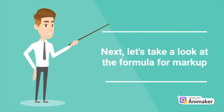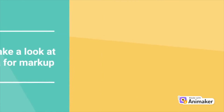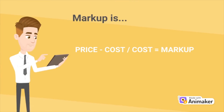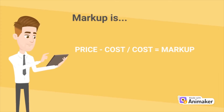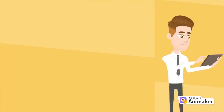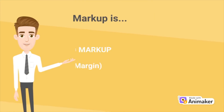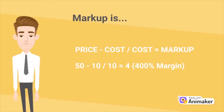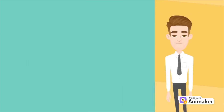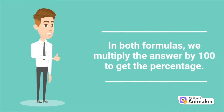Let's take a look at the formula for markup. Markup is price minus cost, but this time we divide by the cost. So if we have a $50 product that costs $10 to make or sell, we divide that by the $10 cost to get 4, or a 400% markup. In both formulas, we multiply the answer by 100 to get the percentage.